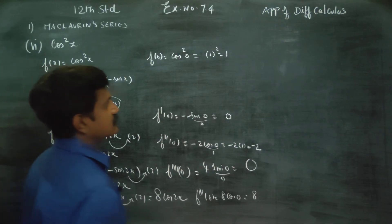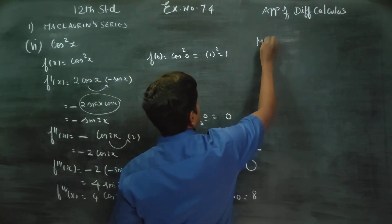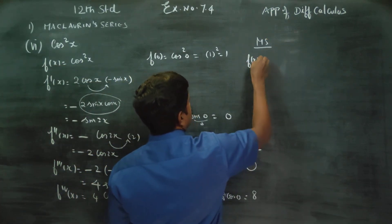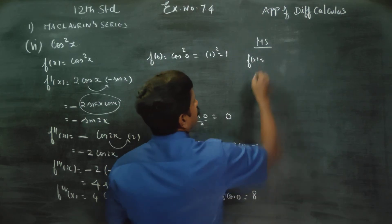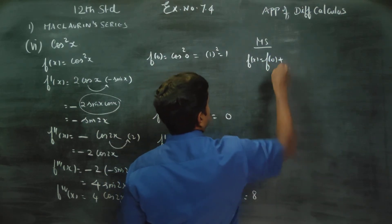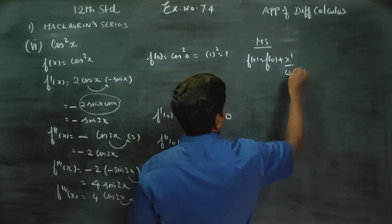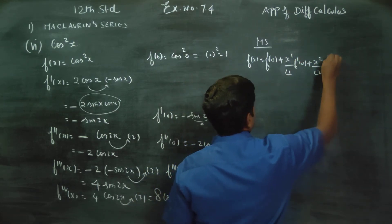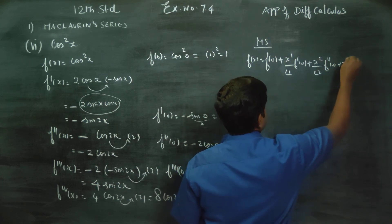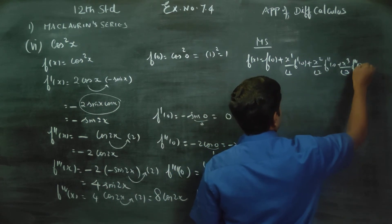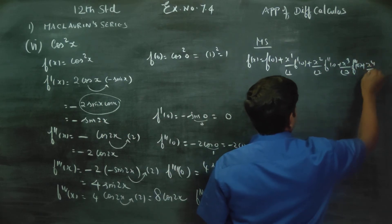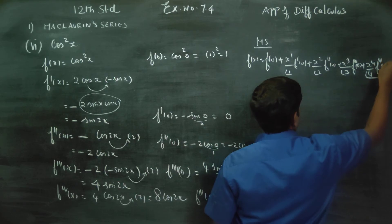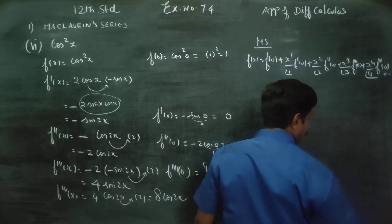I am going to use this in McLaren series. McLaren series: f of x is equal to f of 0 plus x power 1 by factorial 1 f dash 0 plus x square by factorial 2 f double dash 0 plus x power 3 by factorial 3 into f triple dash 0 plus x power 4 by factorial 4 into f4 0, and it goes on, it is an infinite series.